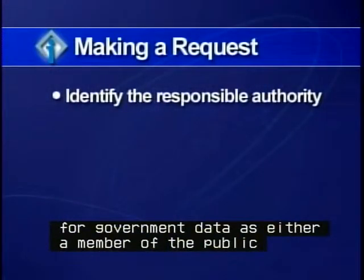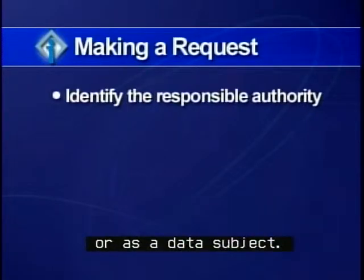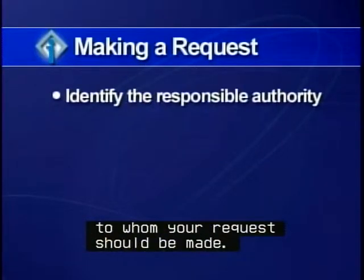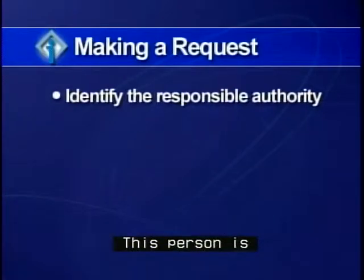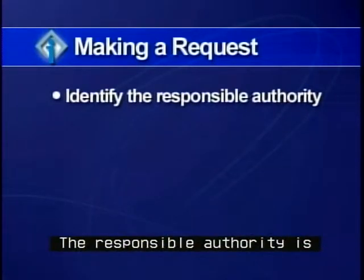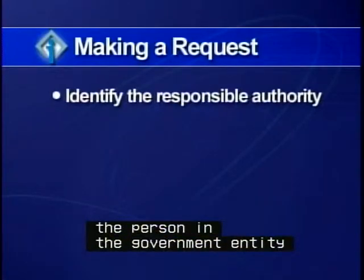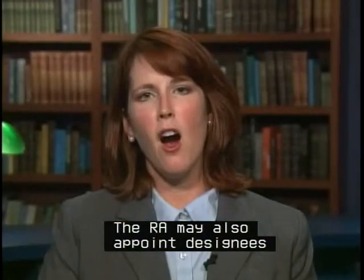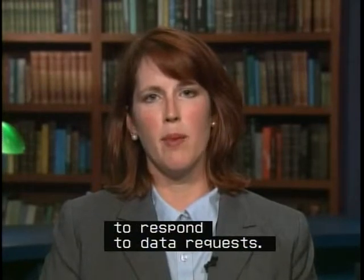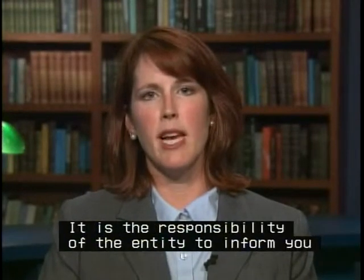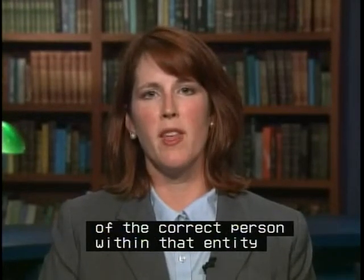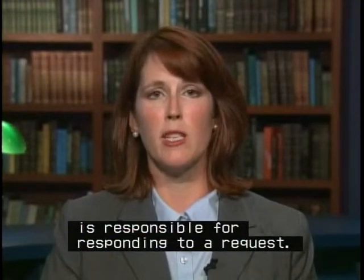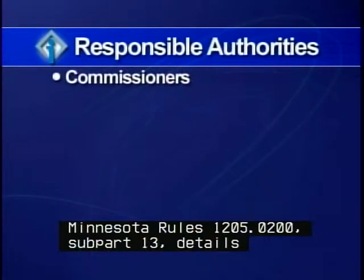Assume you are the individual making a request for government data as either a member of the public or as a data subject. The first step in making either type of request is to identify the appropriate person to whom your request should be made. This person is the government entity's responsible authority, or RA. The RA may also appoint designees to respond to data requests. It is the responsibility of the entity to inform you of the correct person within that entity to make your request to, if a designee rather than the RA is responsible for responding to a request.